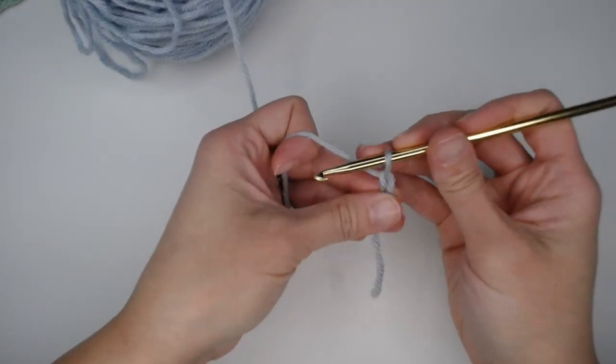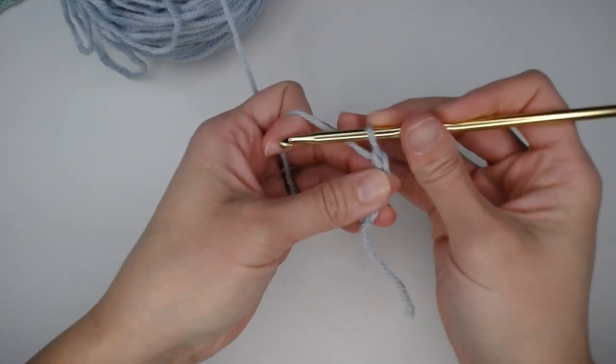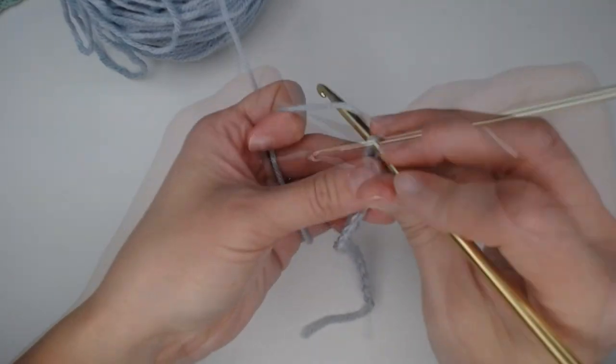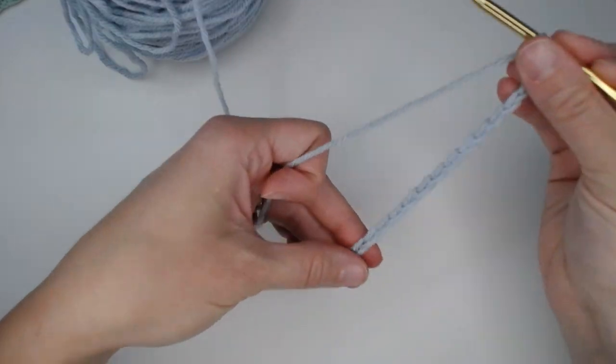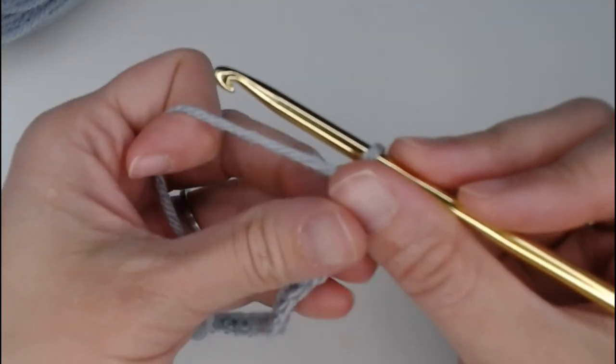1, 2, 3, 4, 5, 19, 20, 21. Great, we have our foundation row chain.